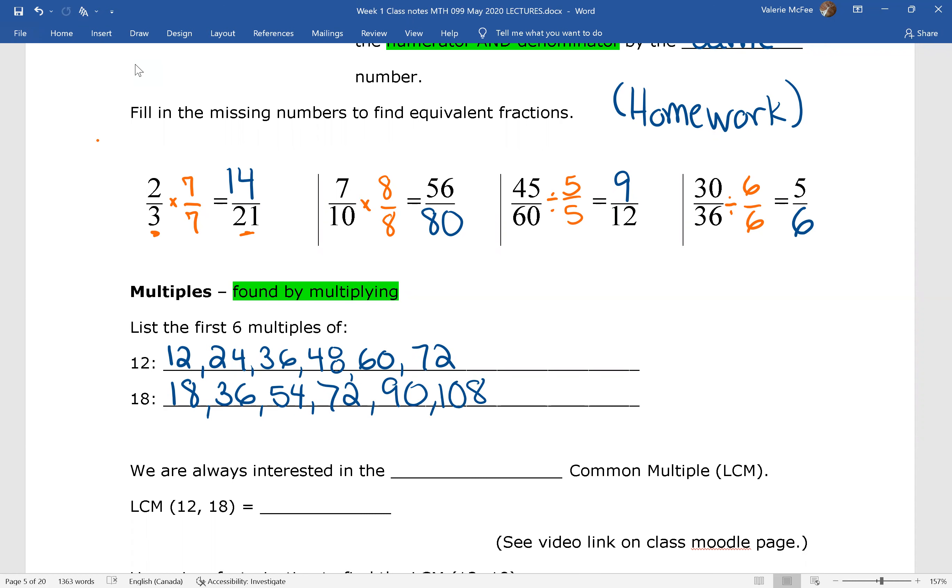When we talked about factors in our first video, we talked about the greatest common factor. Now that we're talking about multiples, we are interested in the lowest common multiple, the LCM. So if we look at the list that we have for the multiples of 12 and 18, we can see the lowest common multiple. Both 12 and 18 divide into 36. They also both divide into 72, but we're interested in the lowest common multiple.